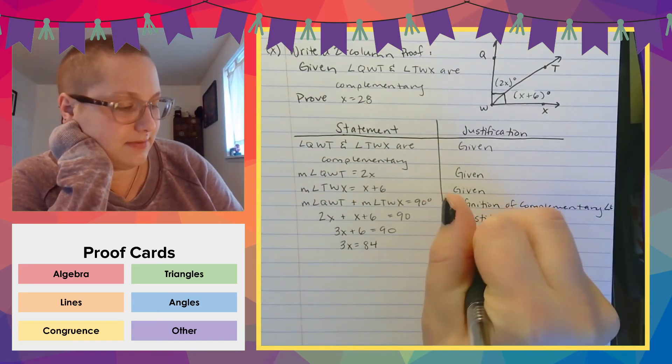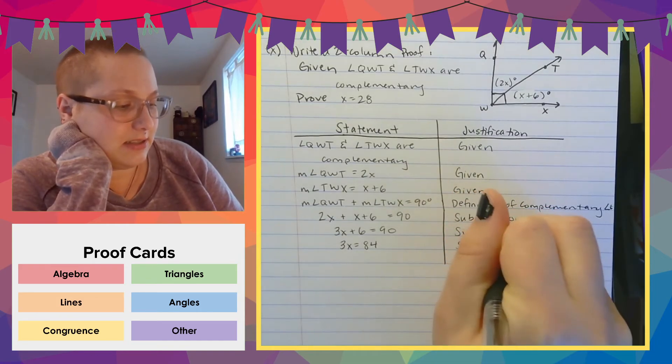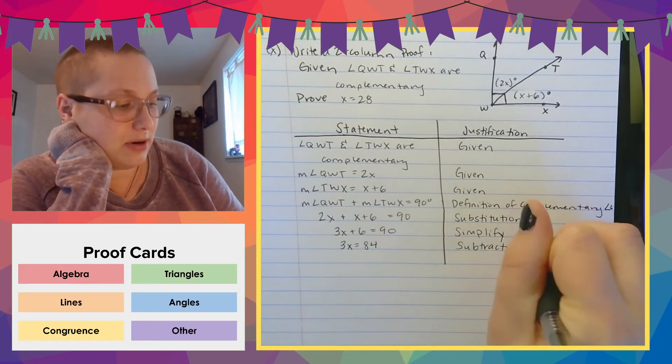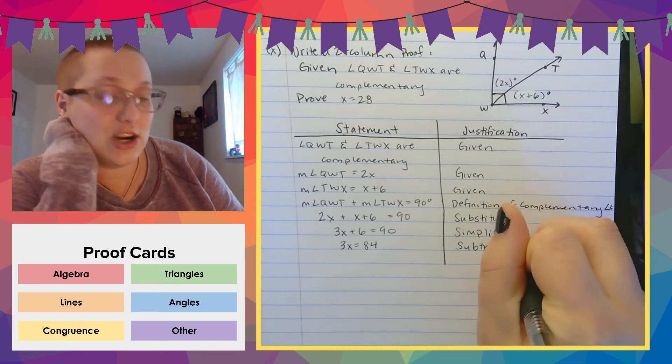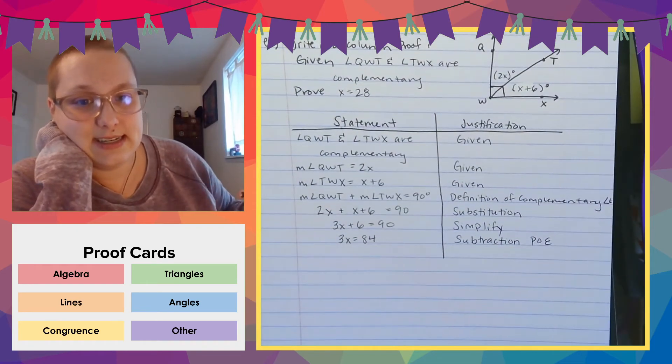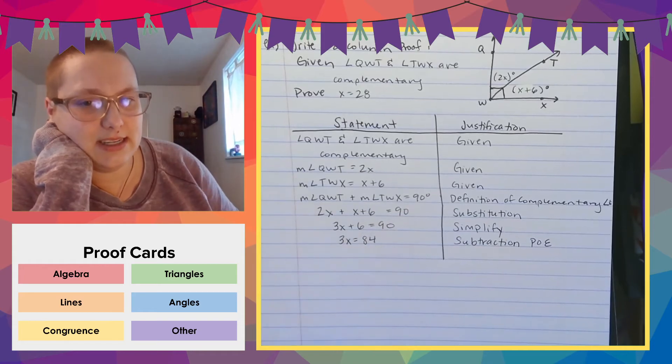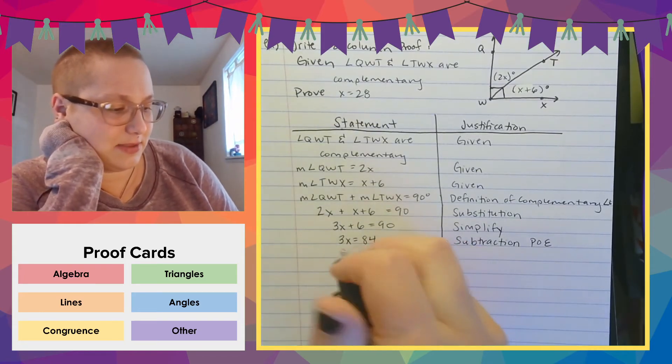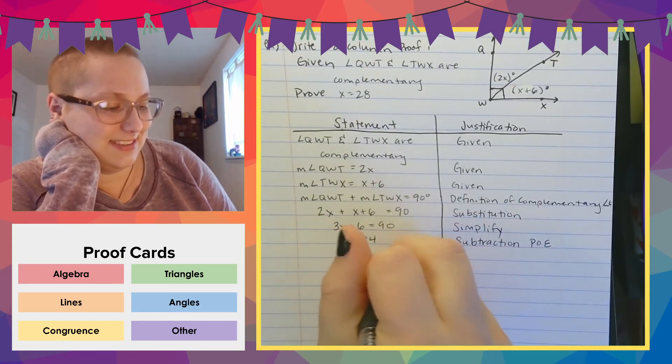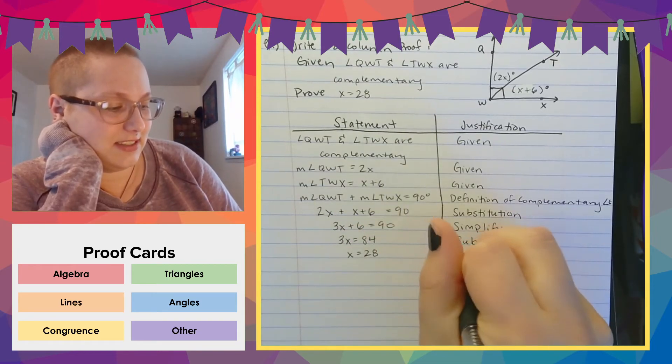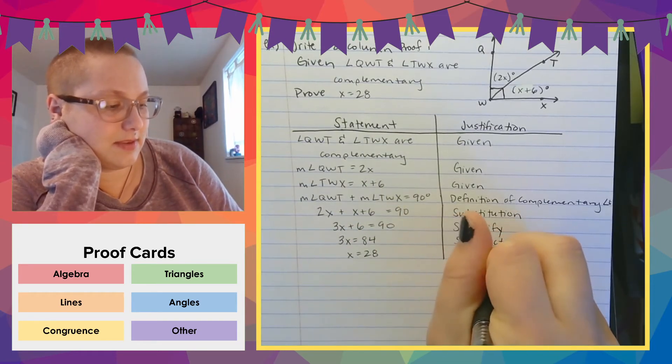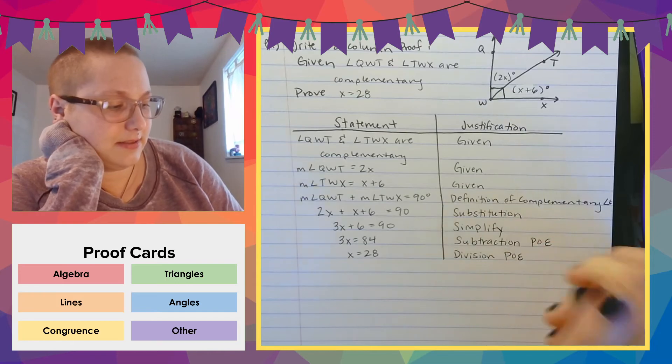Okay. So simplify. And then I'm going to subtract the 6. So I have 3X equals 84. That was subtraction. It's not just subtraction. It's the subtraction property of equality. Again, that's a commonly recognized short version. And then I'm going to divide by 3, which is, it should be 28. So I'm just going to assume it's 28. That was division property of equality. And then I'm done.